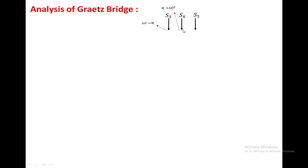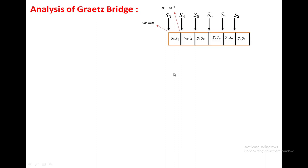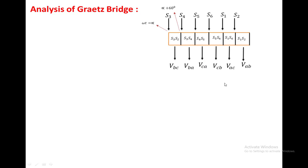We are assuming that at omega t equal to alpha, the third device S3 is on. After 60 degrees, S4 is on; after another 60 degrees, S5, then S6, next S1, then S2. Once the device is on, it has to conduct for 120 degrees. In the first 60 degrees, S3 and S2 are conducting; next S3 and S4; next S4 and S5, and so on. When S3 and S5 are conducting, the output voltage becomes VBC; when S3 and S4 are conducting, the output becomes VBA; then VCA, VCB, VAC, and VAB. In this manner, the DC voltage takes power from the respective line voltages from the input.